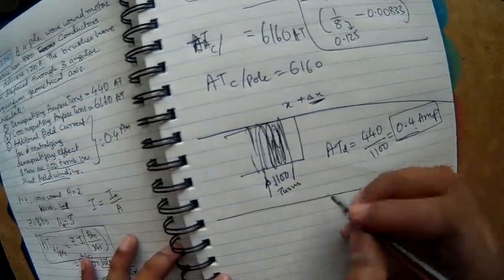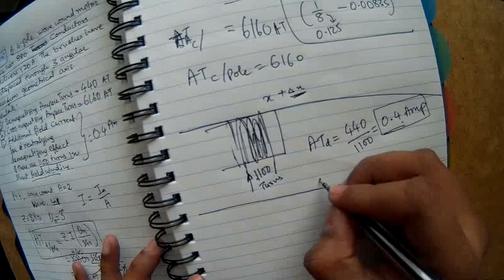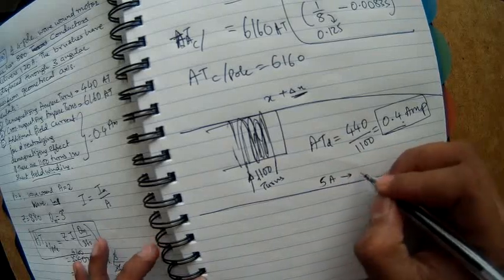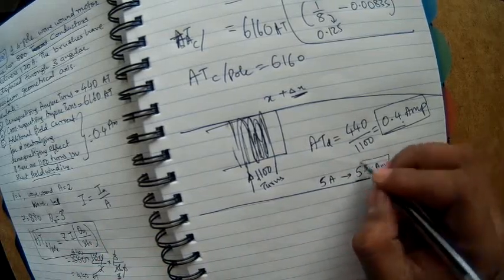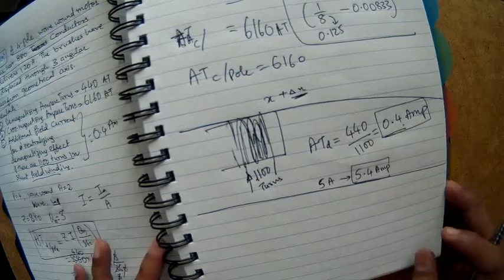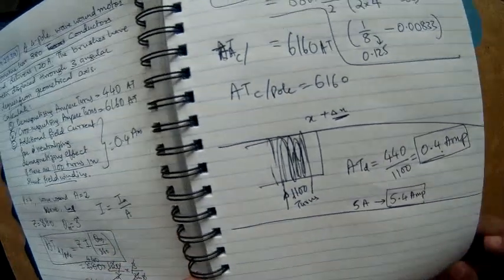For example, if the earlier field current was 5 amperes, now you increase the field current to 5.4 amperes. This is another way - by strengthening your field you're able to address the effect of demagnetization.